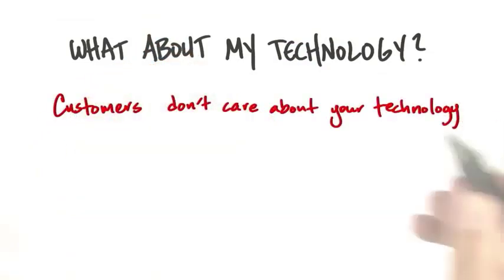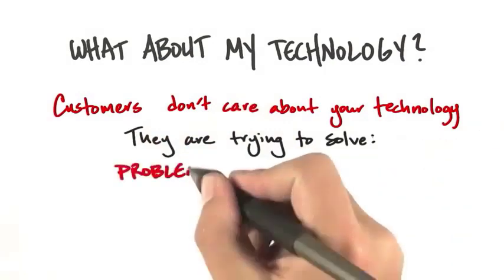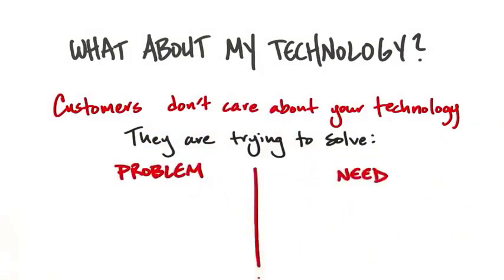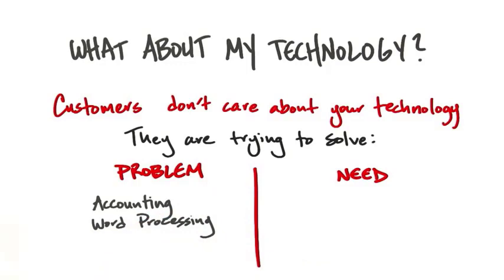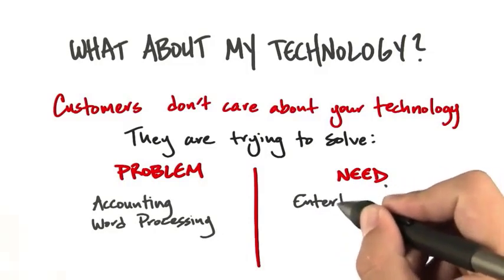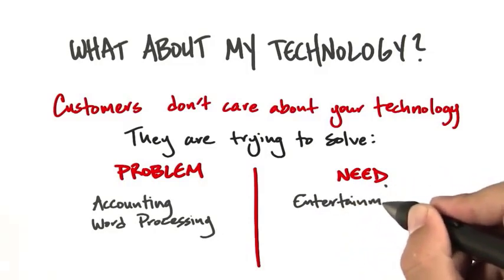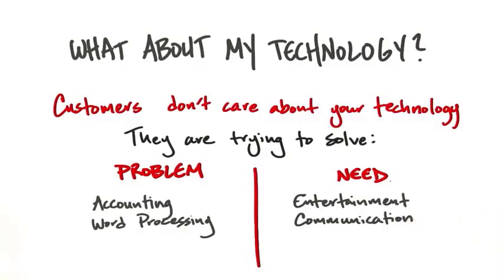Customers really don't care about your technology. They're trying to solve a problem or fulfill a need. The difference between a problem and a need: a problem is something like an accounting issue or using a word processor. But there are other things humans do — like wanting to be entertained, have a date, or communicate with friends like on Facebook or Twitter — those are needs. If you can find products that solve needs, your total available market is huge compared to solving specific problems.